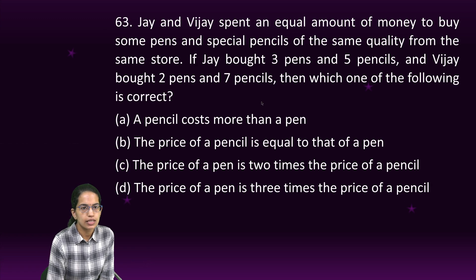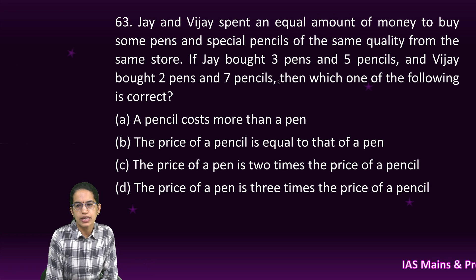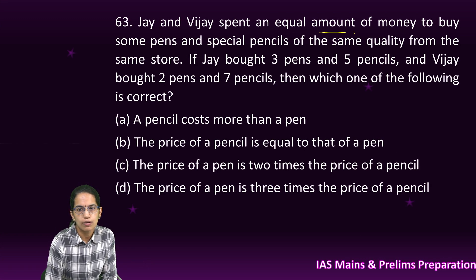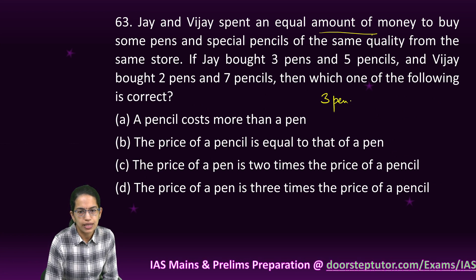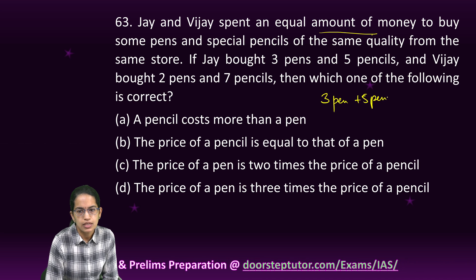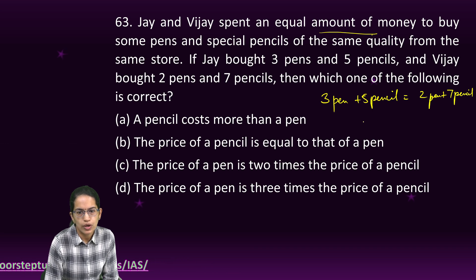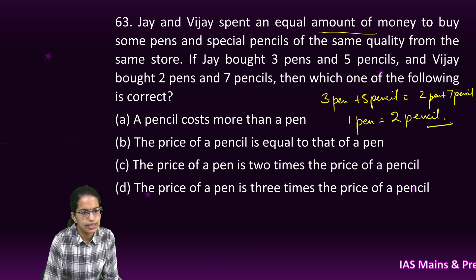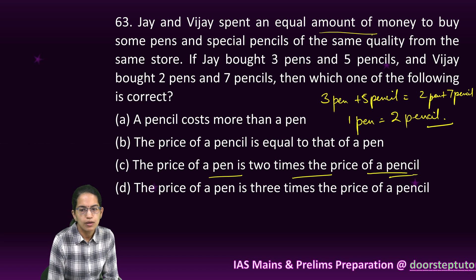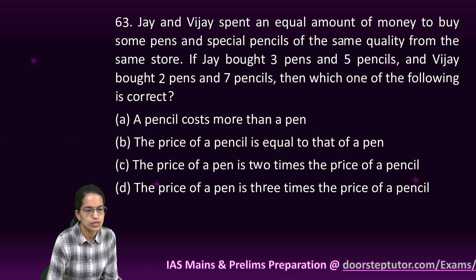The next question involves two friends who spend equal amounts of money. Jeb-watts buys: 3 pen + 5 pencil = 2 pen + 7 pencil. Taking pen to one side: 1 pen = 2 pencil. Therefore the price of the pen is two times the price of the pencil. A very direct question.